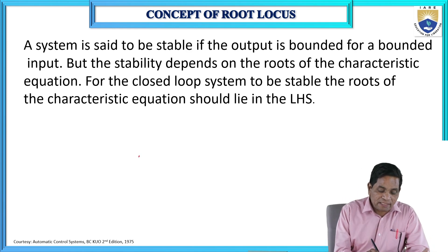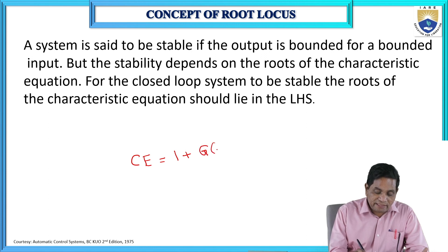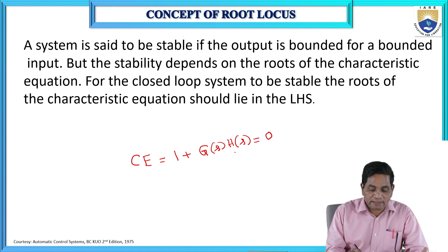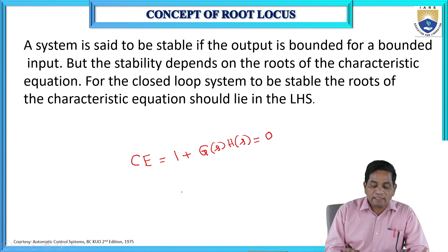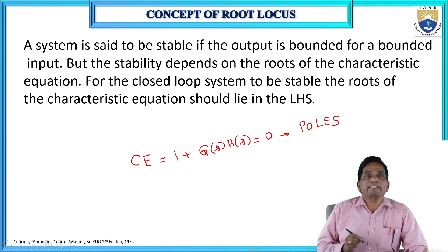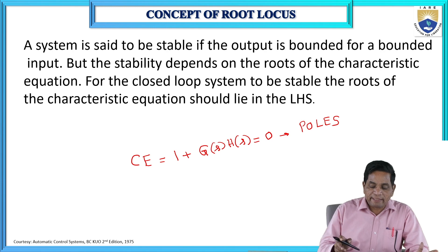The characteristic equation is nothing but 1 plus G(S)H(S) = 0, assuming the system has negative feedback. If the system is unity feedback, H(S) = 1; for positive feedback, the sign becomes negative. The roots of the characteristic equation are nothing but the poles. For a system to be stable, a bounded input should produce a bounded output.